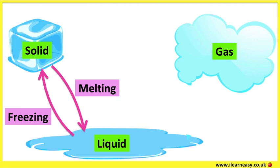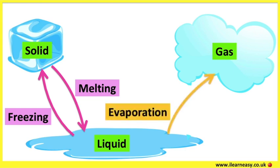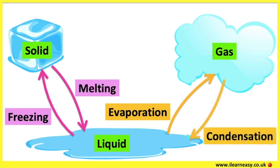When a liquid changes into a gas, this is called evaporation. For example, water changes into steam when it's boiled in a kettle. When a gas changes into a liquid, this is called condensation. For example, water vapour changes into water when moving into a warm place from a cold place — for example, when you have foggy windows.